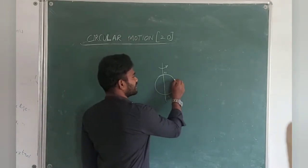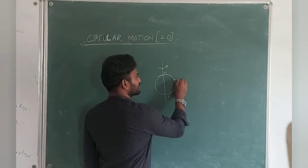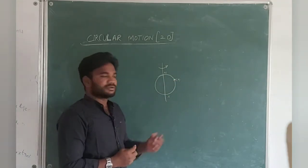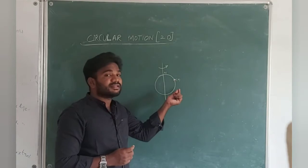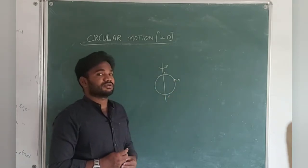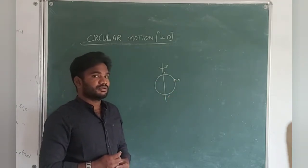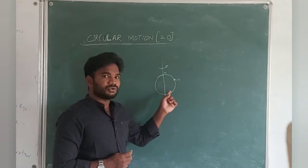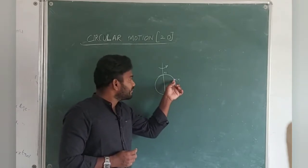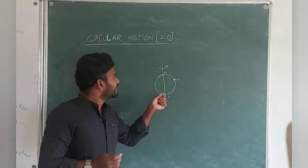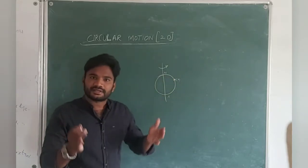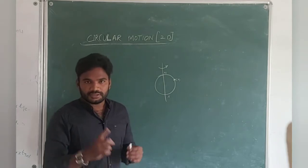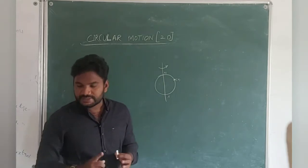Let me consider Chennai is a point on the earth's surface. Earth is in rotatory motion, but the place Chennai is in circular motion. Not only Chennai — each and every place on the earth is in circular motion, but earth itself is in rotatory motion.